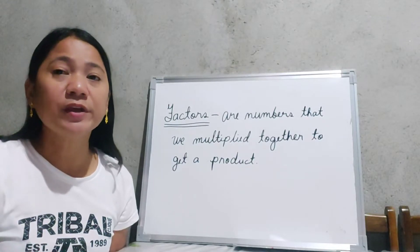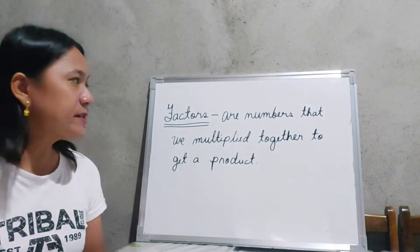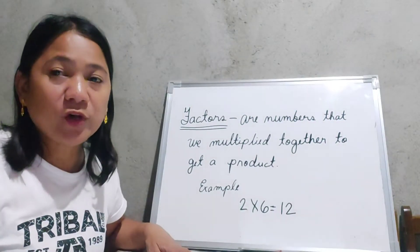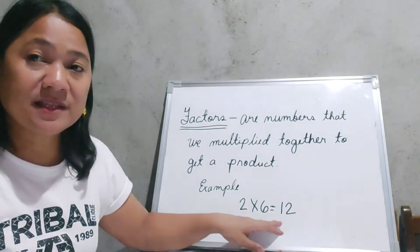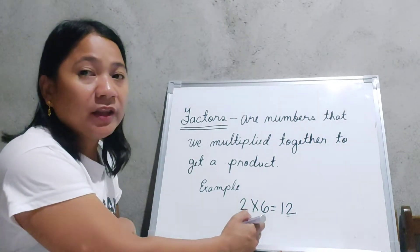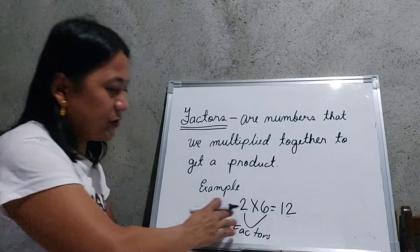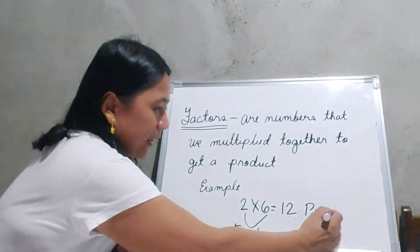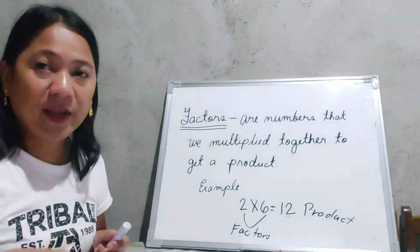The first thing we should do in this lesson is to identify the meaning of factors. Factors are numbers that we multiply together to get a product. For example, 2 times 6 is equal to 12. Since 12 is our product, then these two numbers are what we call the factors. So 2 and 6 are the factors and 12 is the product.